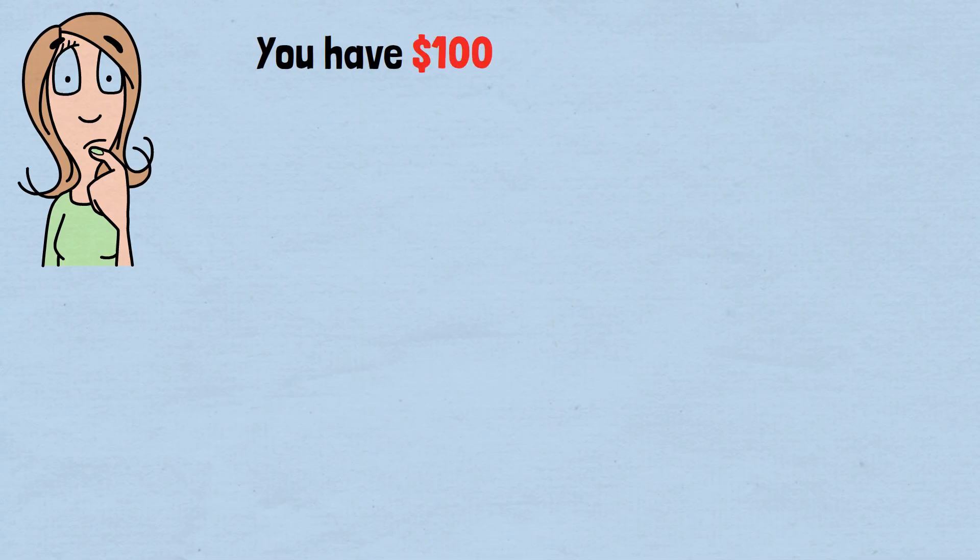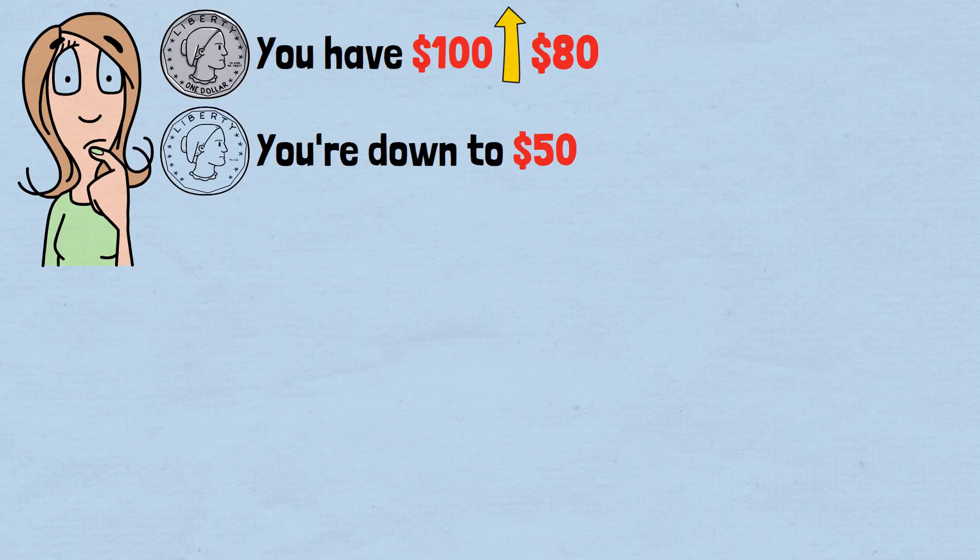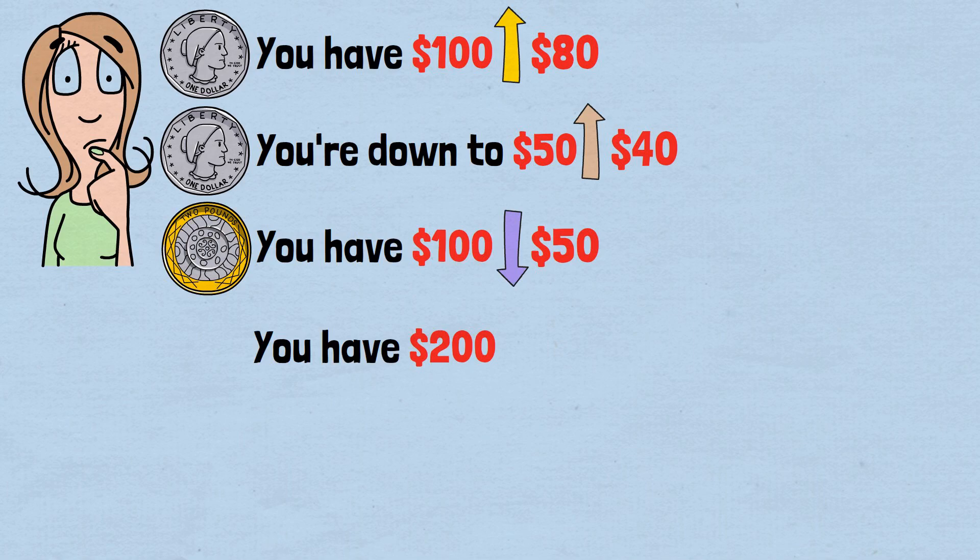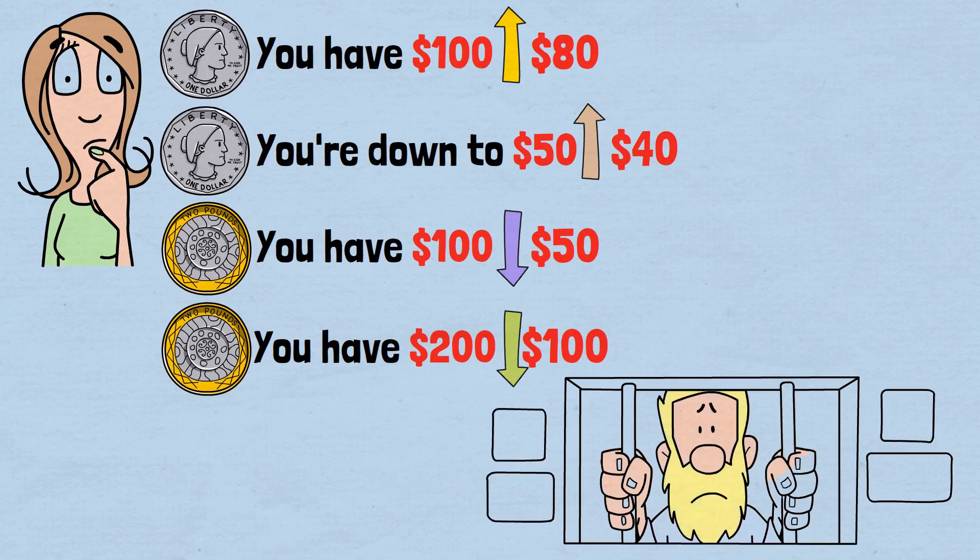Think about it. When you have $100 and flip heads, you gain $80. But when you're down to $50 and flip heads, you only gain $40. Meanwhile, when you have $100 and flip tails, you lose $50. And when you have $200 and flip tails, you lose $100. This asymmetry is the trap. The multiplicative nature of the game means that losses have a compounding effect that gains can never fully recover from.